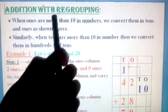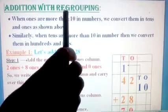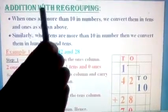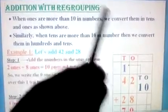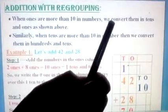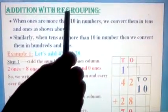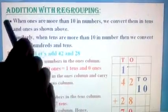Addition with regrouping means it is going to have carryover with it. When you have without regrouping, there is no carryover along with the group. Here you have with regrouping. That is, you are going to carry something. Let's see what it is.